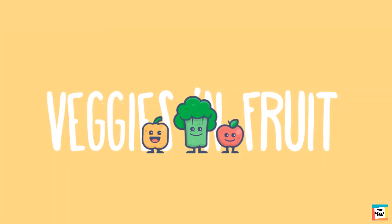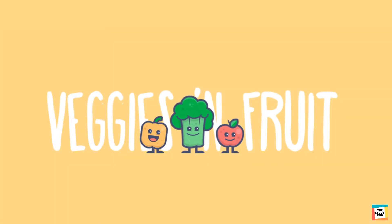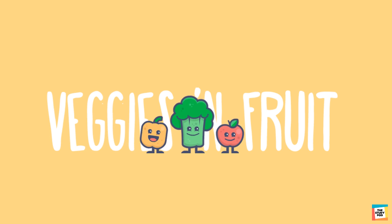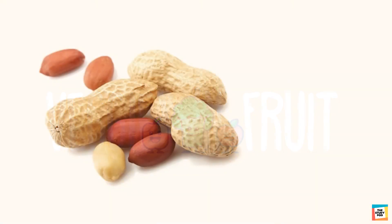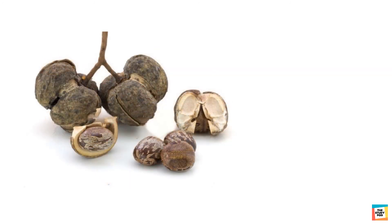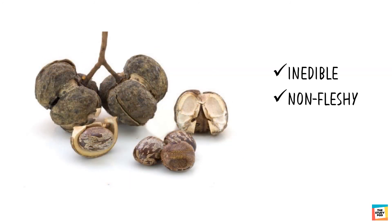So, by that definition, fruits and vegetables both are considered as fruits. Peanuts are edible, non-fleshy and dry fruits. Rubber fruits are inedible, non-fleshy and dry.